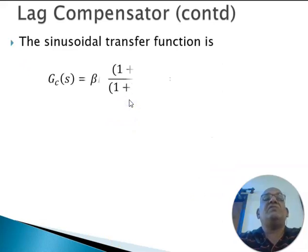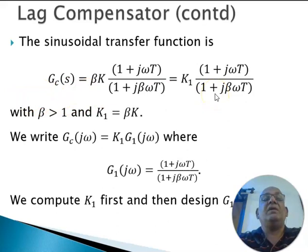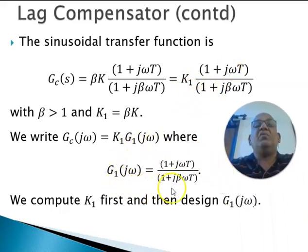The sinusoidal transfer function of the lag compensator is given here, and we write that this Gc of j omega is made out of two parts, K1 and G1. We consider it to consist of two parts: one a constant part, second a dynamic part. The dynamic part is given over here.